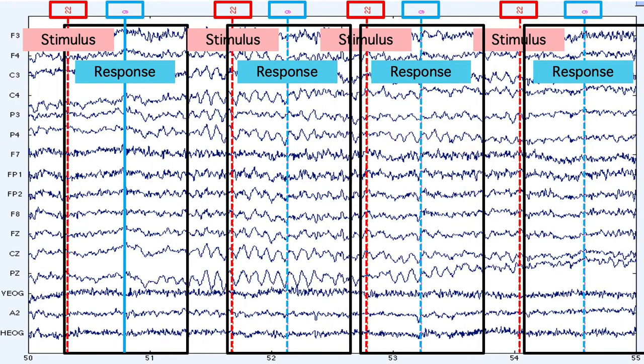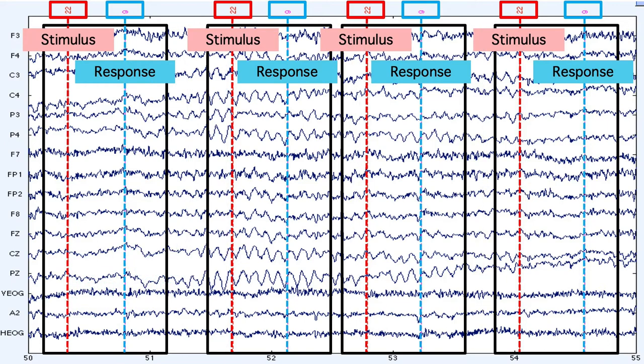Sometimes we like to look at response-locked activity, in which case each epoch might go from 500 milliseconds before the response to 500 milliseconds after. But for the rest of this video, we're going to focus on stimulus-locked averages. Okay, that's epoching, which is pretty simple.